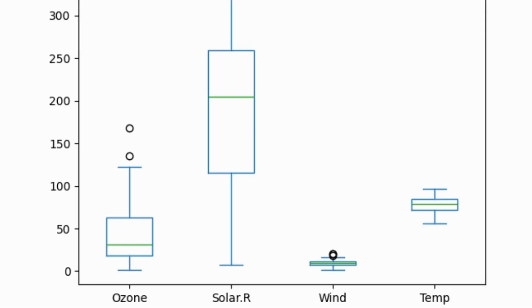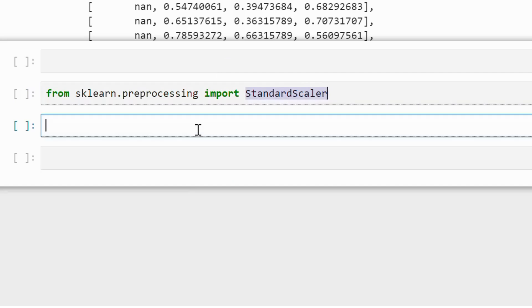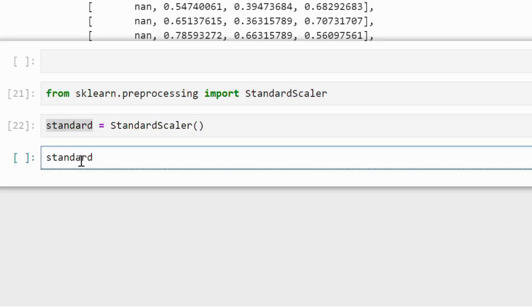Now let's implement standardization in Python. We need to import StandardScaler from the scikit-learn library. Similar to MinMaxScaler, we have to call the fit_transform method and pass the data into it.